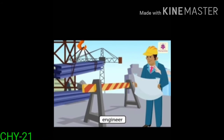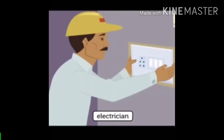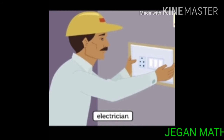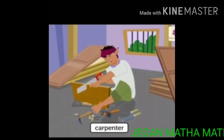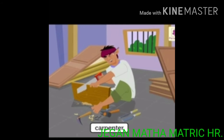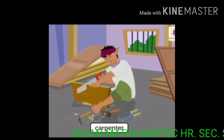He sees to it that the house is built according to the plan. The next person is an electrician. He does the electric work like installing the wiring and switches for fans, lights, air conditioner and other electronic appliances. The next person is a carpenter. He makes beautifully designed doors, windows and furniture for the house.